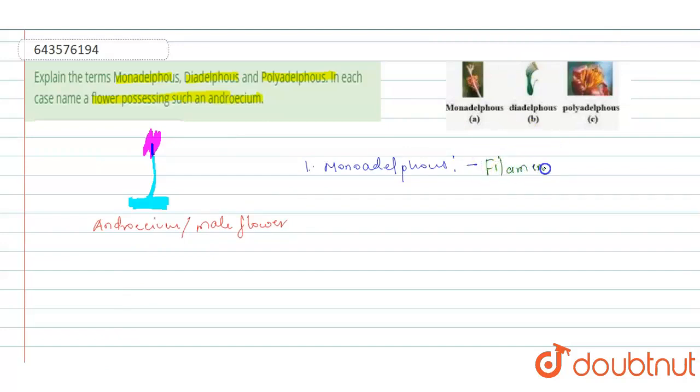A good example of monadelphous is China rose. So in this condition, filaments are fused. China rose or hibiscus is the example.